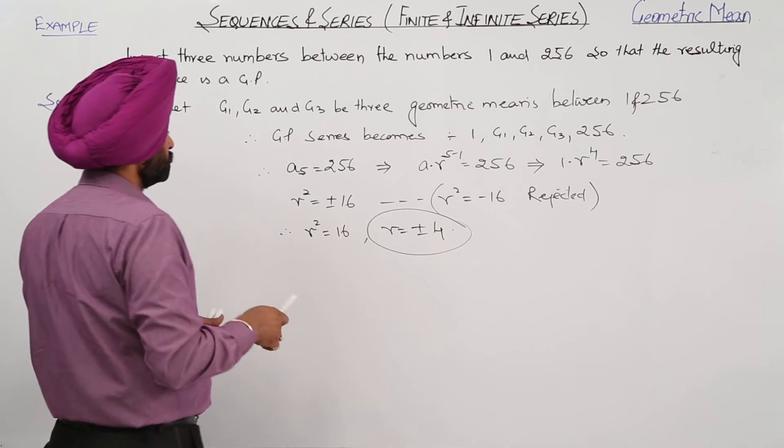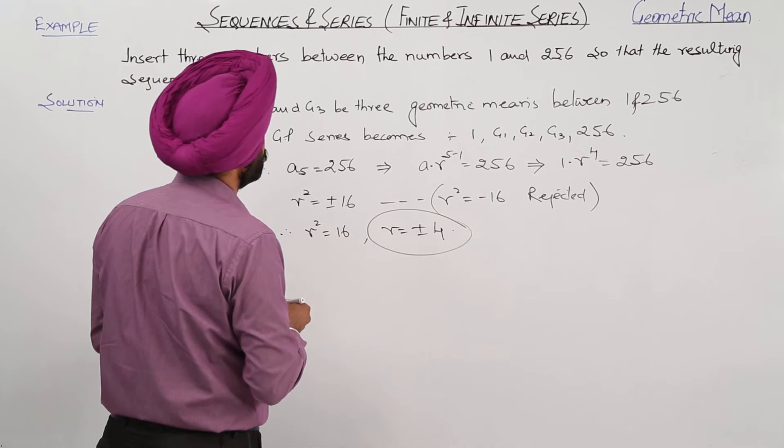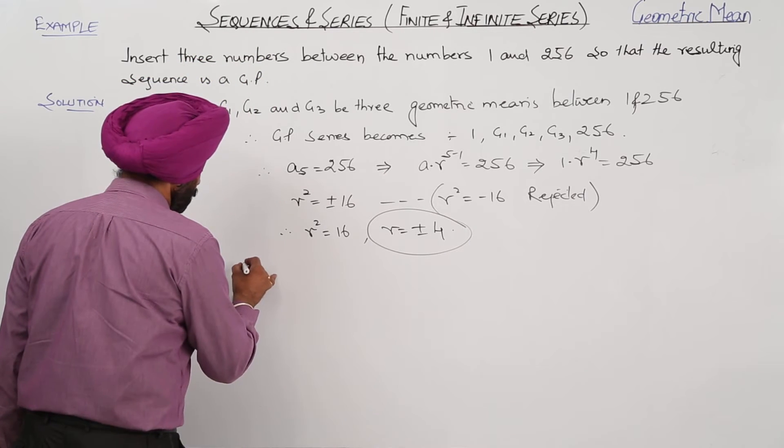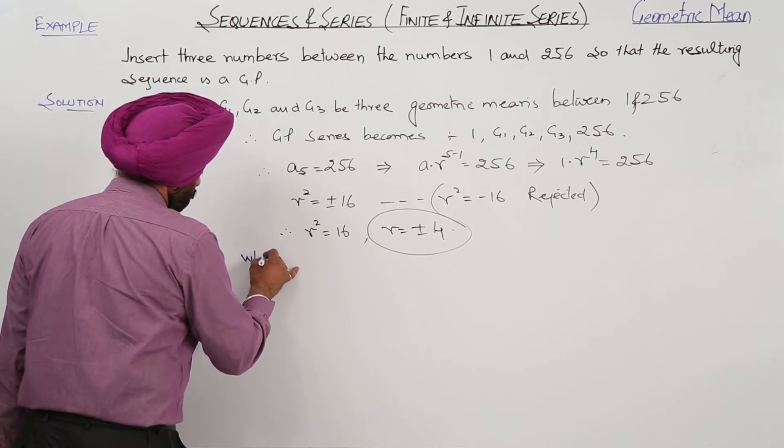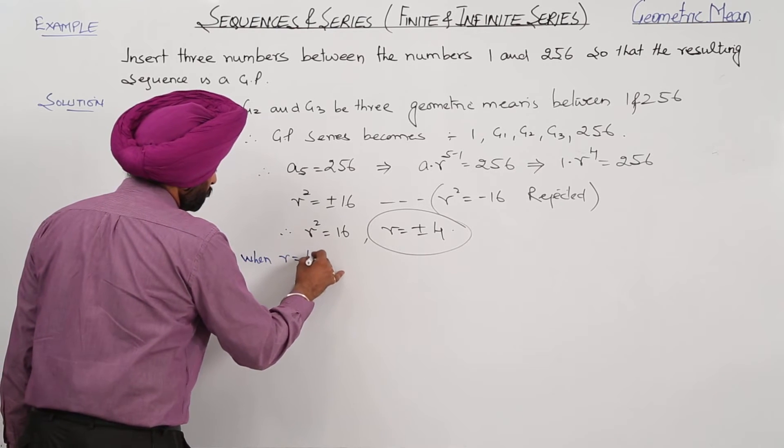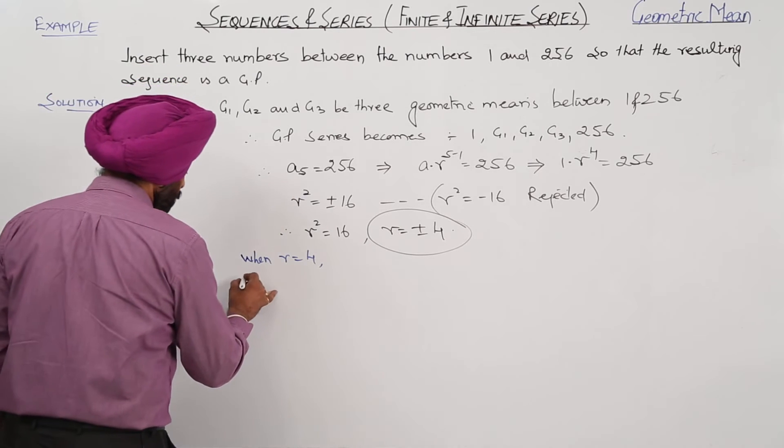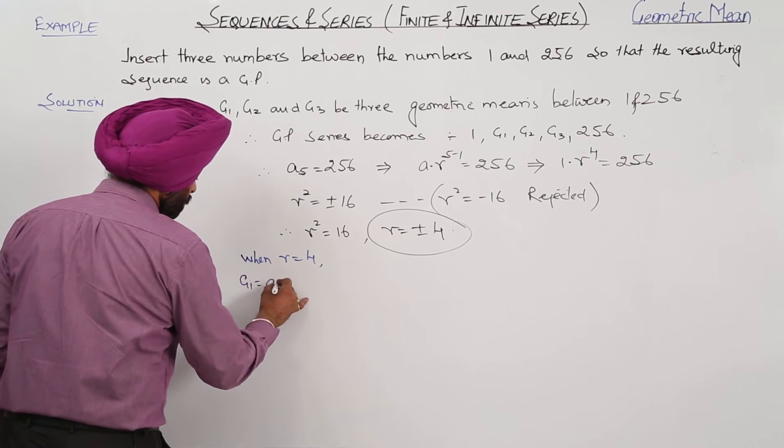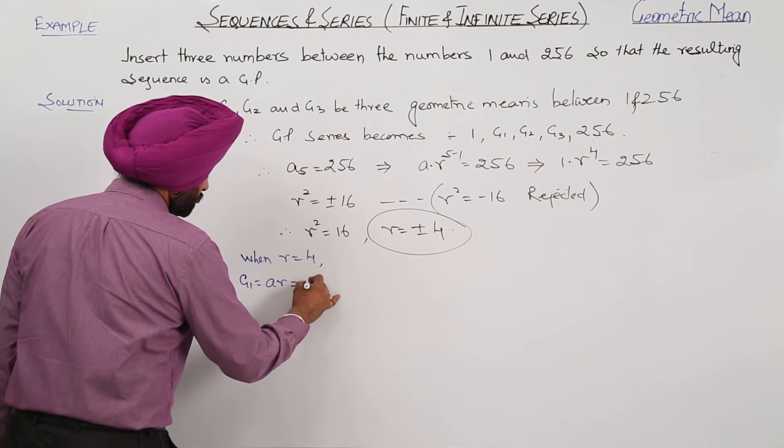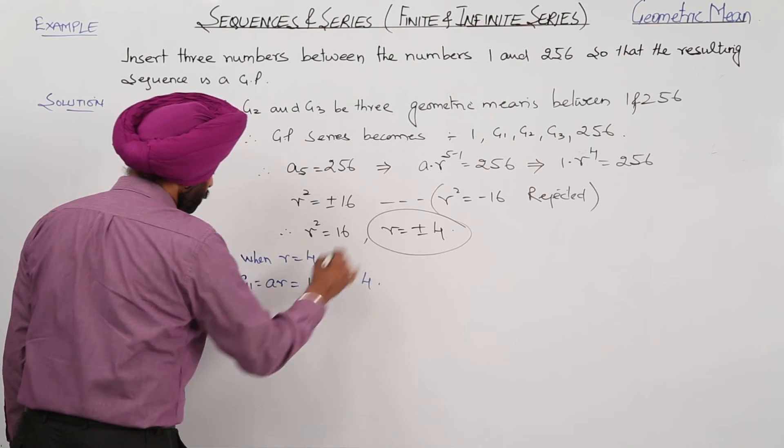Now we have to find the geometric means. When R is equal to 4, case 1, here G1 is equal to AR, this is equal to 1 times 4 is equal to 4.